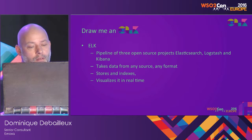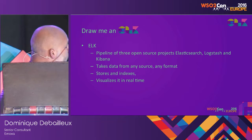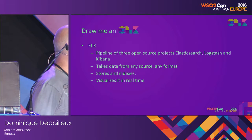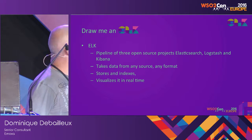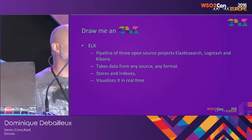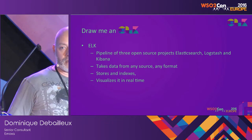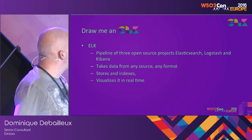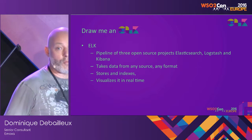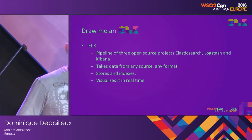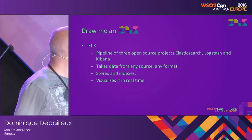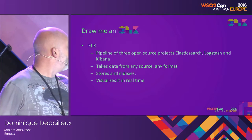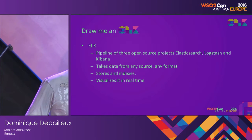ELK is a pipeline of three open source projects: the E is Elasticsearch, the L is Logstash, and the K is Kibana. It takes data from any source, in any format — more than 50 different input plugins. It stores and indexes data using Elasticsearch, and visualizes it in real time using Kibana.